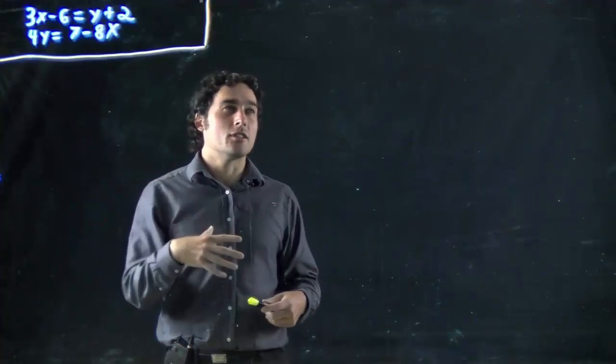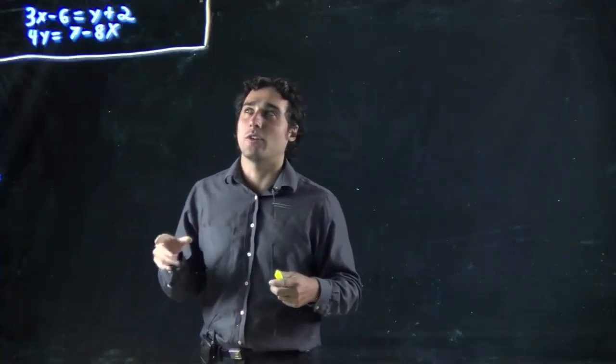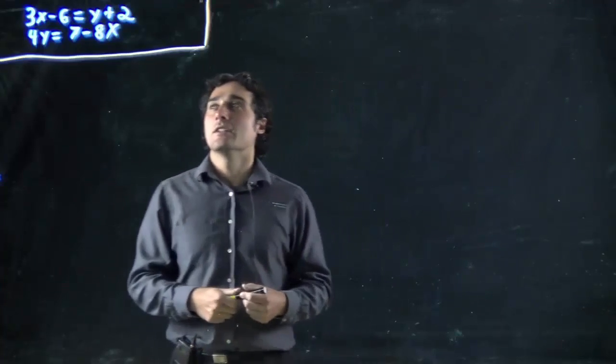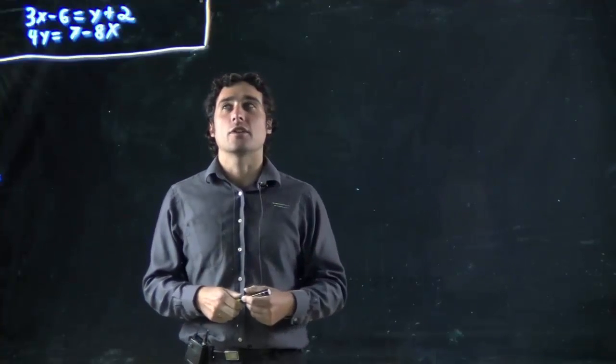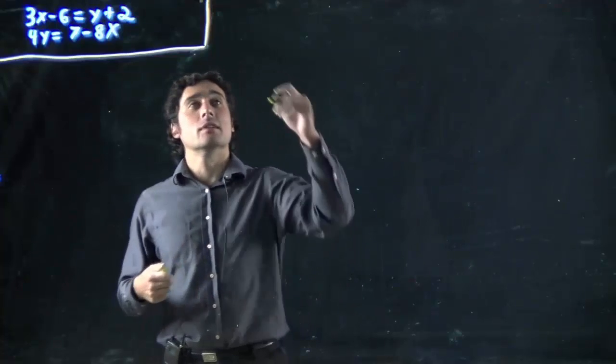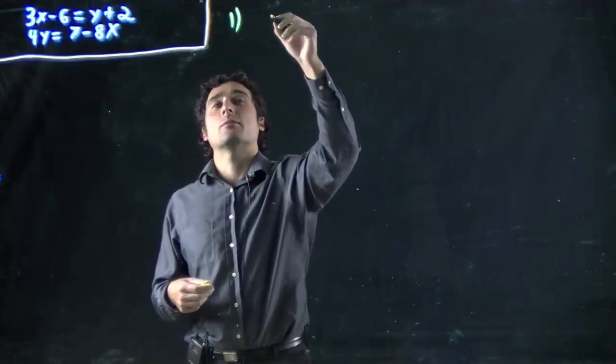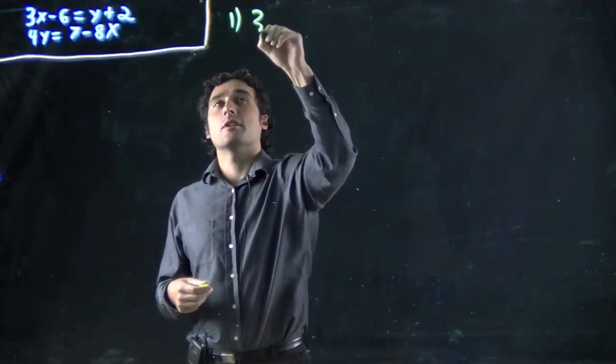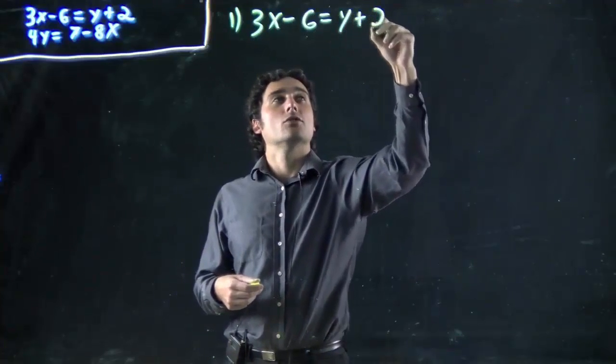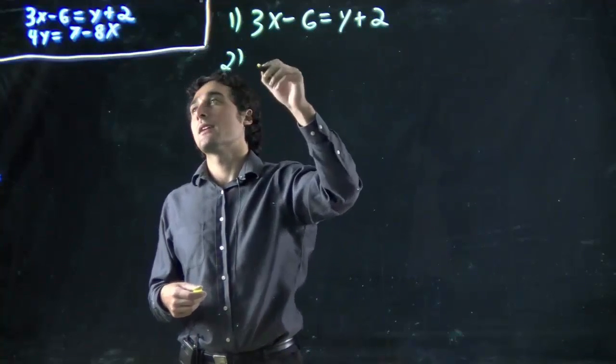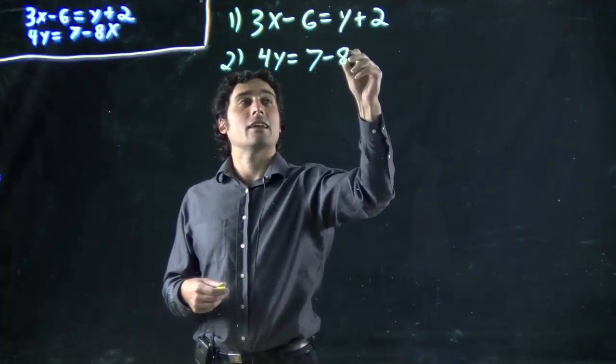This would be related to the idea of solving where two lines intersect, the actual x-y coordinate where they hit. I'm going to number the equations to make referring to them easier. Equation 1 is 3x minus 6 equals y plus 2, and equation 2 is 4y equals 7 minus 8x.